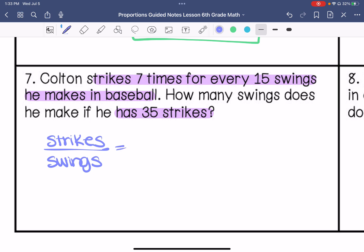So he strikes 7 times for 15 swings. So if he has 35 strikes, how many swings did he make? 7 times 5 is 35. So 15 times 5. So he had 75 swings.